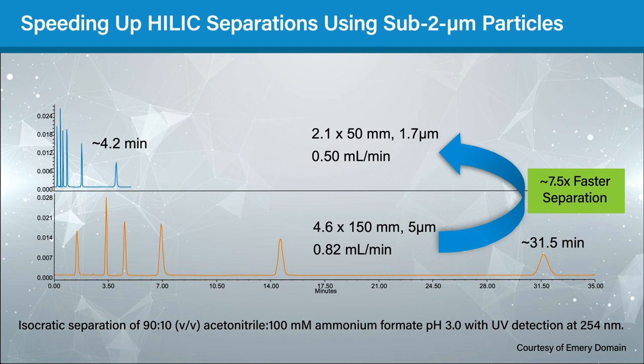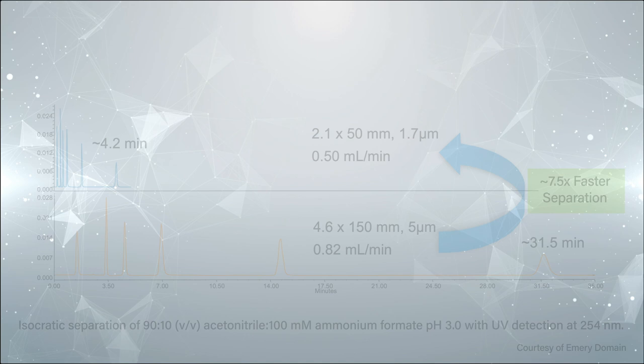Waters' HILIC UPLC columns use either silica or ethylene bridged hybrid particles, which are both mechanically strong and yield high column efficiencies. Even if pressure is not a main concern, speeding up a separation is always advantageous and using UPLC systems and columns can help achieve that goal.